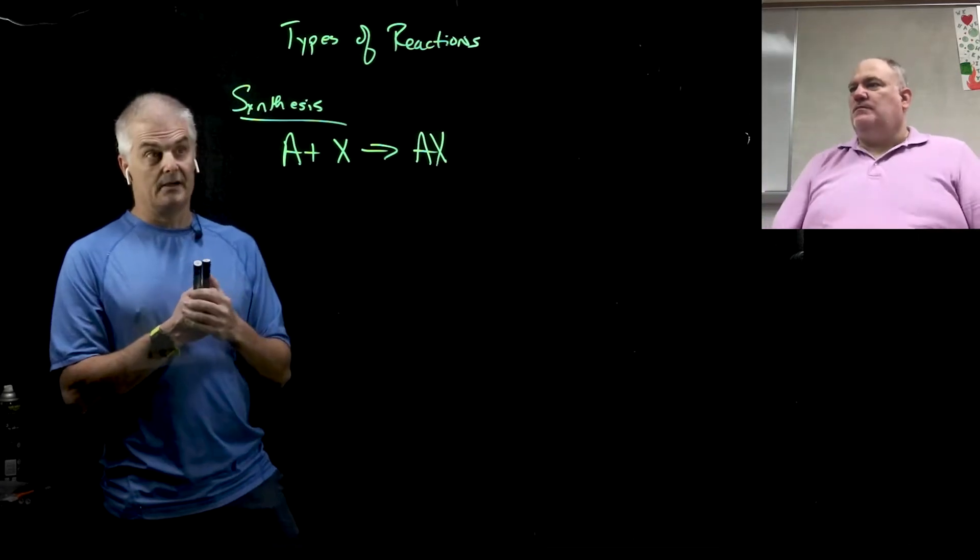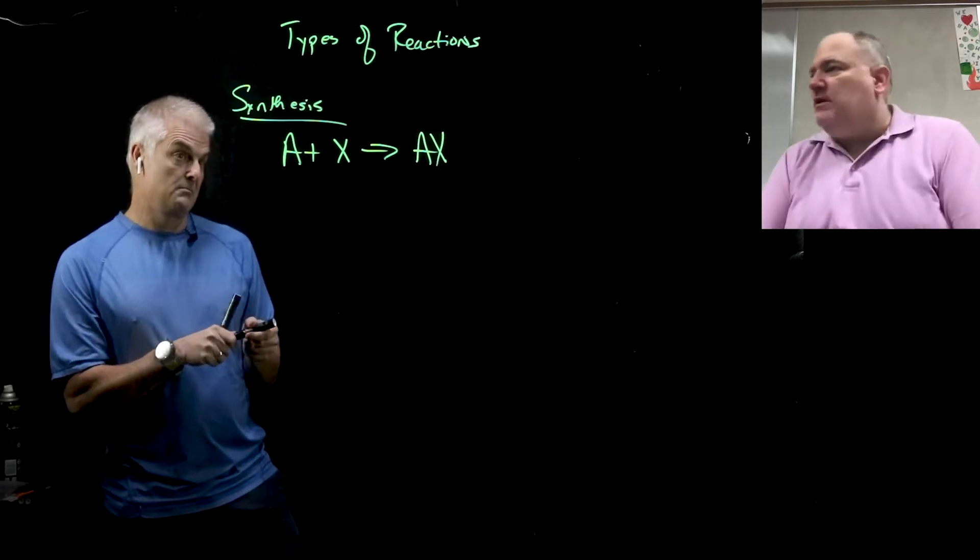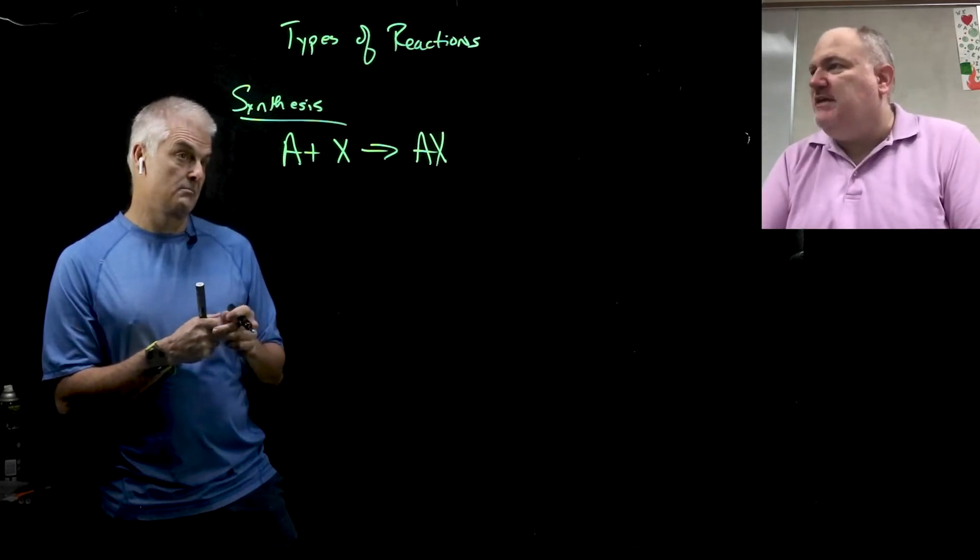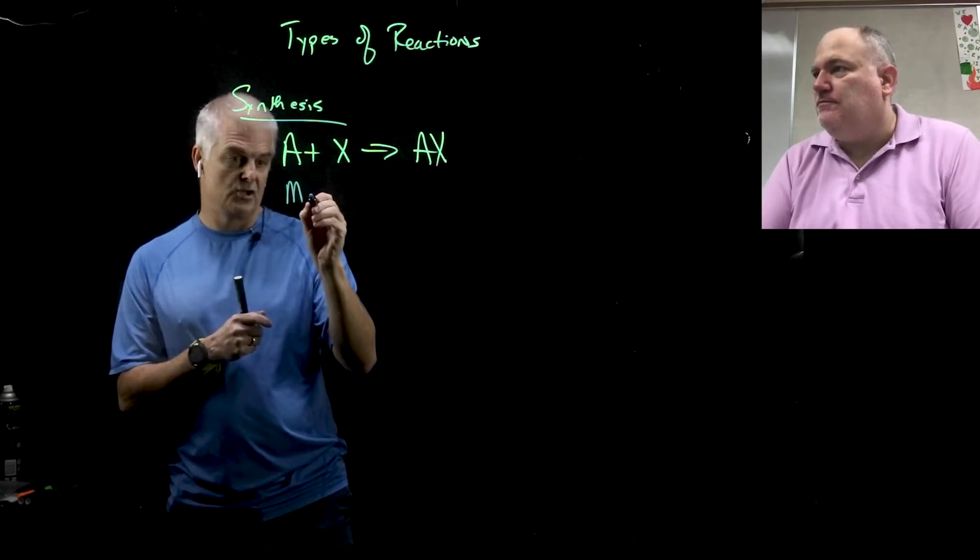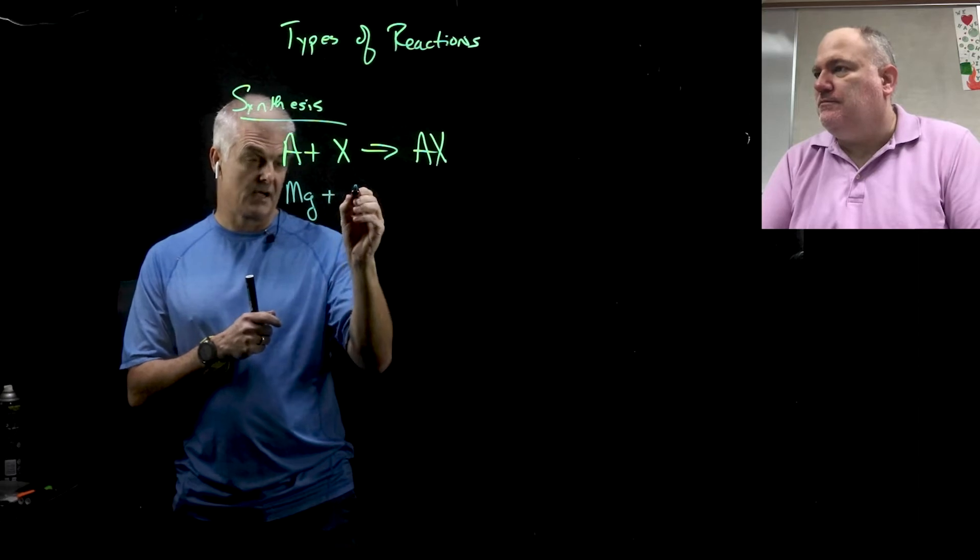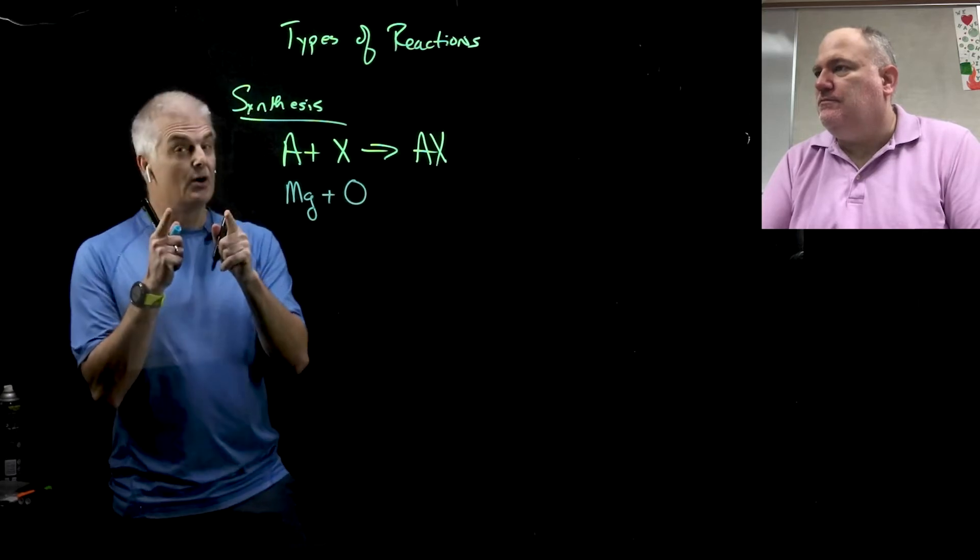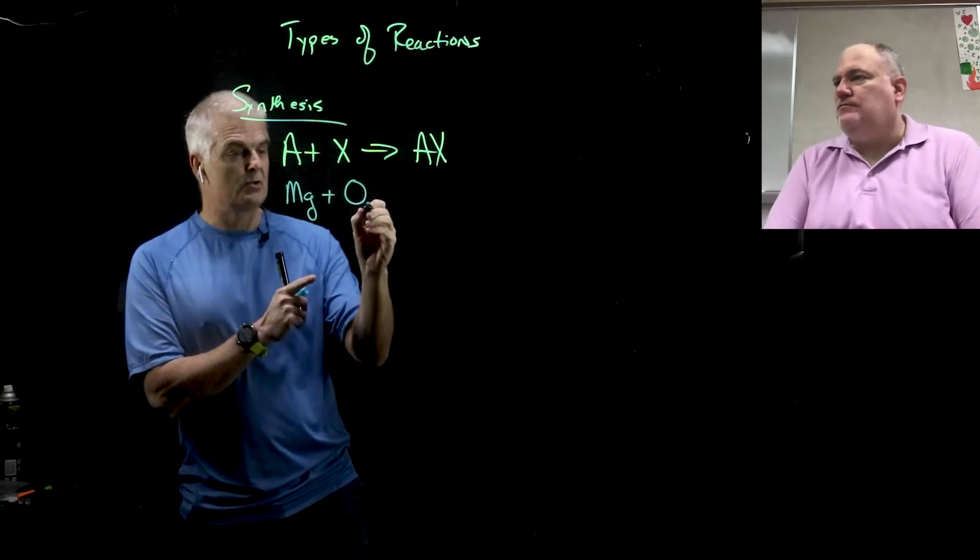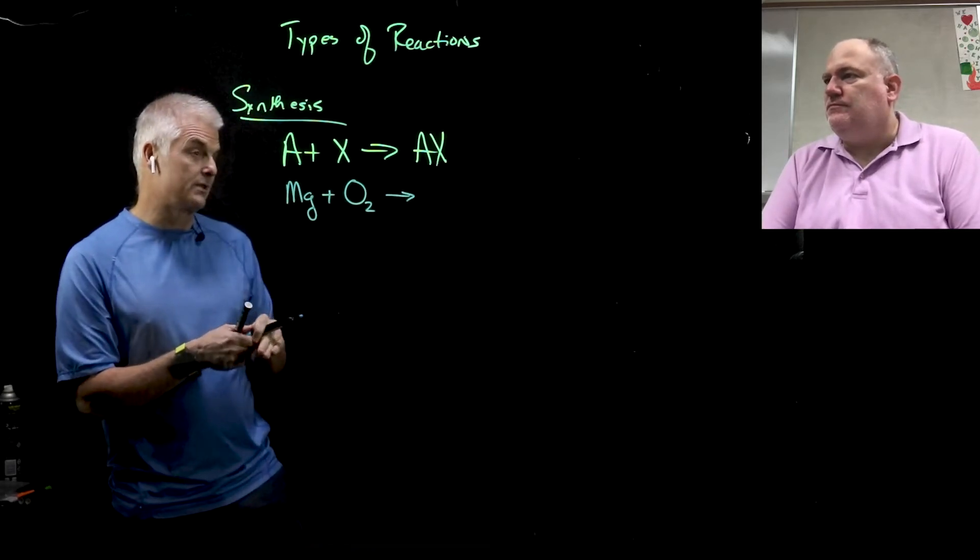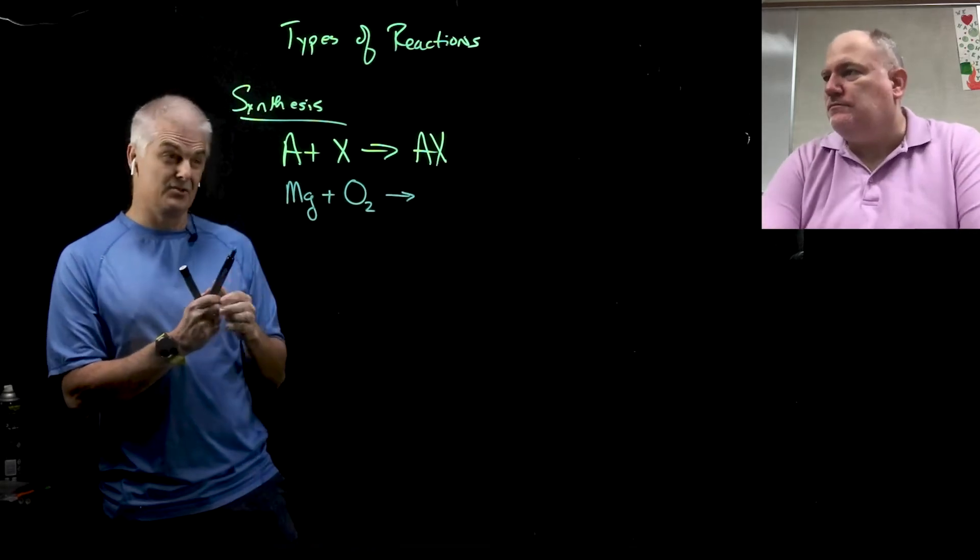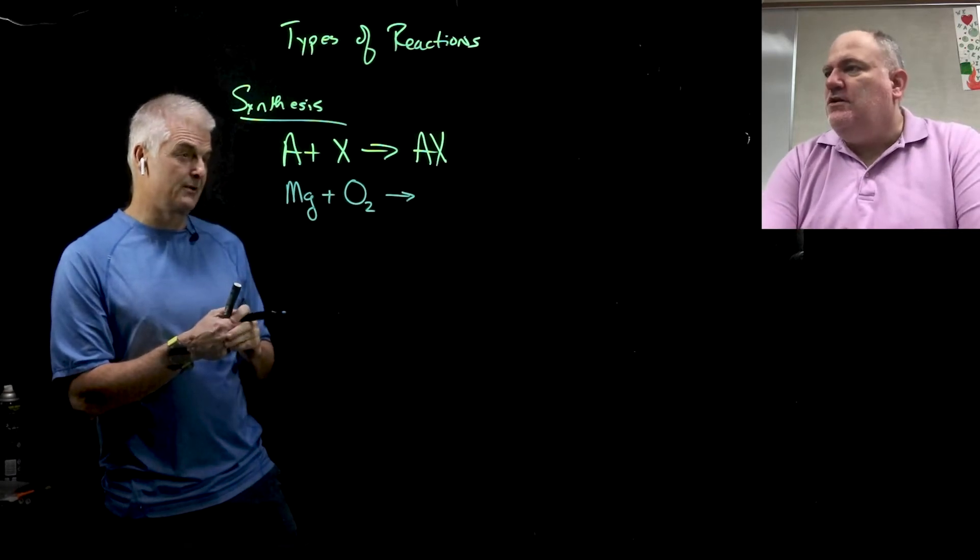So Mr. Dimitiewicz, what would be an example of a synthesis reaction? Well, typically what we're going to have is we're going to have a word equation. So let's do magnesium plus oxygen. So Mg is magnesium plus oxygen. Now tricky folks, it's not O, it's plus O₂ and that makes magnesium oxide. Now it's a little tricky on what the product is. It's not MgO₂, is it, Mr. Dimitiewicz. How do I figure that out?